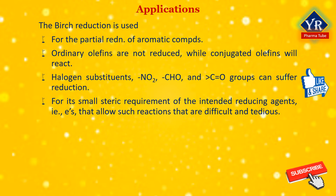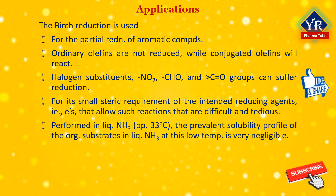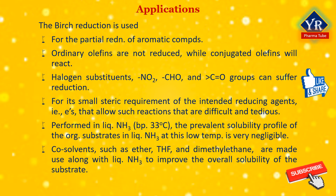Interestingly, as the Birch reduction is usually performed in liquid ammonia, which has a boiling point of -33 degrees centigrade, the solubility of organic substrates in liquid ammonia at this low temperature is very negligible. Hence, the usage of co-solvents such as ether, tetrahydrofuran, and dimethoxyethane are invariably used along with liquid ammonia so as to improve the overall solubility of the substrate. Amazingly, for monosubstituted benzenes, the reduction is extremely stereoselective and the observed selectivity is critically controlled by the polar nature of the substituents.